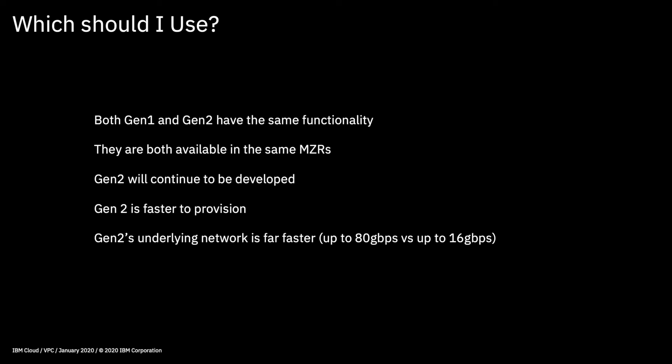Gen 2's underlying network is far faster, and if you're building something right now for development, test, or a proof of concept, then Gen 1 will do the job for you. But if you're looking at something longer term and production use, then Gen 2 is probably the place to be — assuming you can place it into the right MZR.